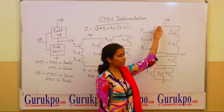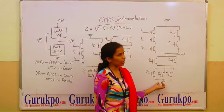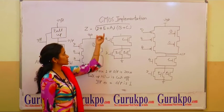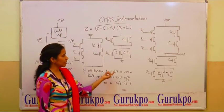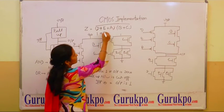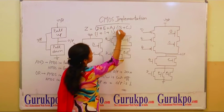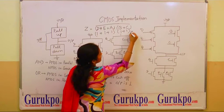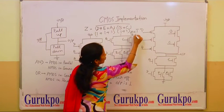Pull-up network is connected to VDD and pull-down network is connected to ground. When we take an example, when we take inputs, like when all the inputs are 1, then output is 0. Because when we take all the inputs are 1, then output is always 0.